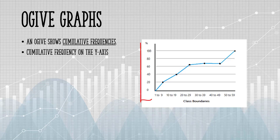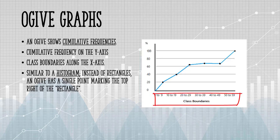Cumulative frequency is on the y-axis and class boundaries are on the x-axis. It's very similar to a histogram, only instead of rectangles an ogive has a single point marking where the top right of the rectangle would be.